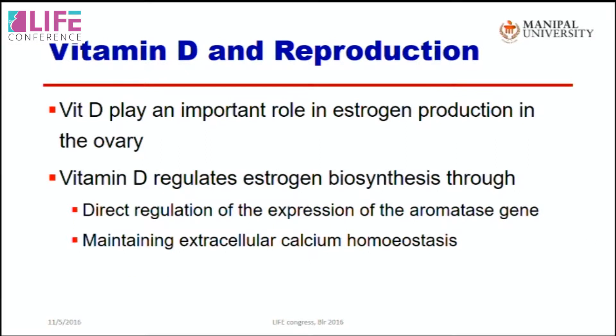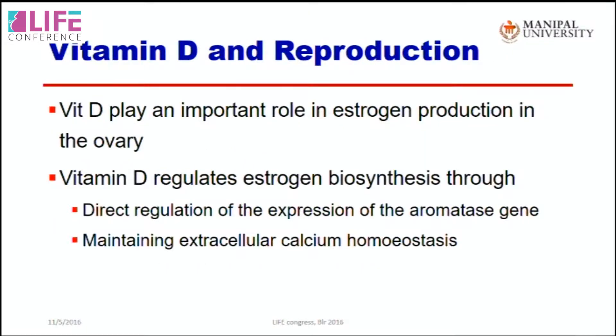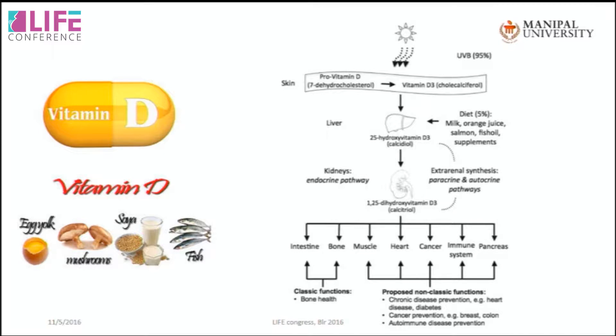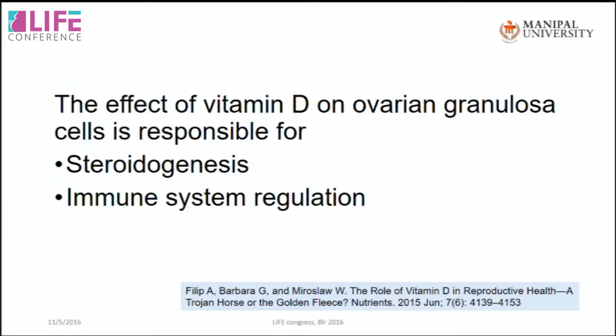Vitamin D plays an important role in estrogen production, regulating biosynthesis through direct regulation of the aromatase gene and maintaining extracellular calcium homeostasis. Additionally, vitamin D alters the immune system, which has been proved scientifically. The active form has many important roles that have been discussed for reproductive health but were historically overlooked in the context of reproduction.